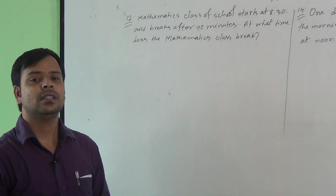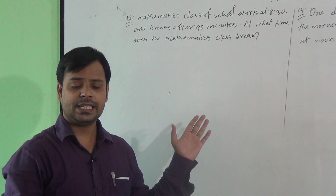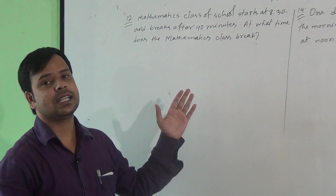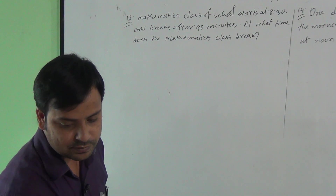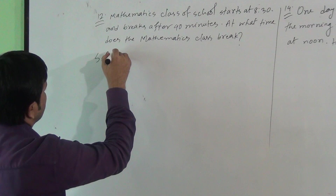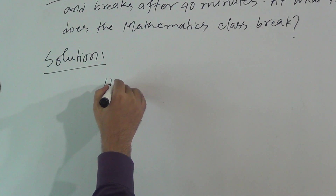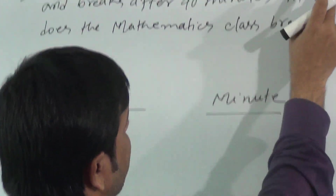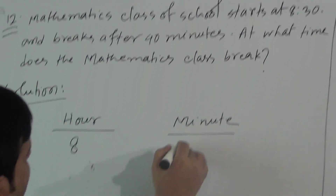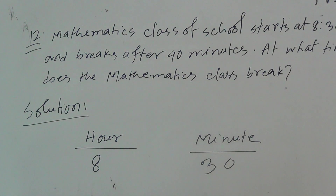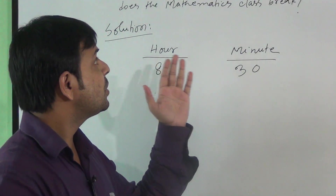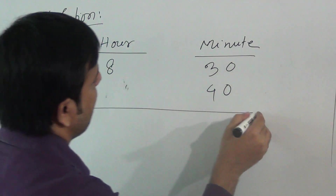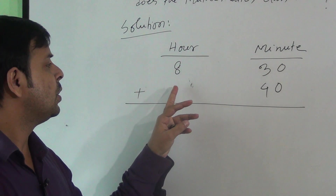We have to find the time when the class will break. To do this, we have to add the duration of the class with the given starting time. We will solve the question this way — at first I'll write here 'hour' and then 'minute'. Here, 8:30 means 8 is in hour and 30 is in minute. The duration of the class is 40 minutes, so we have to add 40 with minutes. As there is no hour in the duration, that column will be blank.